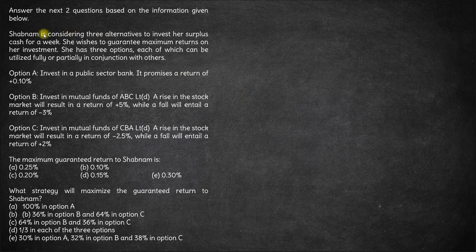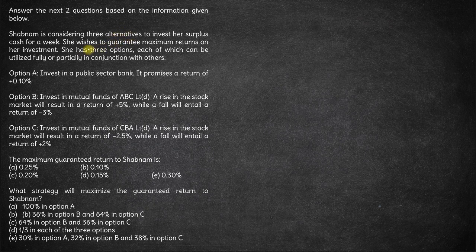Shabnam is considering three alternatives to invest her surplus cash for a week. She wishes to guarantee maximum returns on her investment. A very important word here is 'guarantee' — she wants to guarantee maximum returns. These three investment options can each be utilized fully or partially in conjunction with the others, meaning they can be used in some combination.